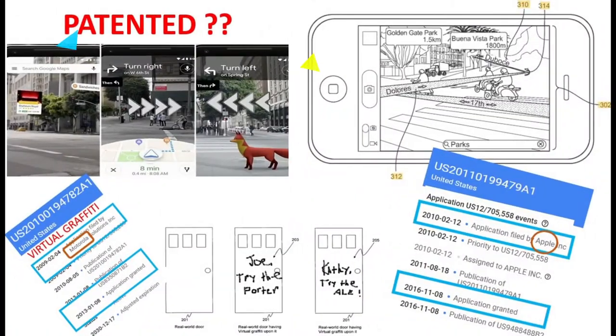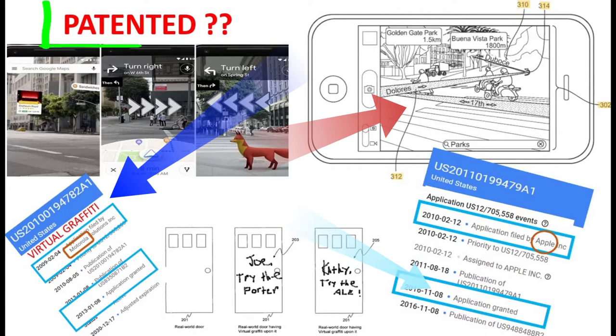Street view in AR mode, making graffiti as hidden messages - such applications are patented. Without any inventive steps, these cannot be patented.